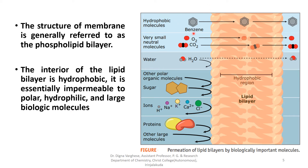The hydrophobic interior makes the membrane essentially impermeable to polar, hydrophilic, and large biological molecules. Hydrophobic molecules such as benzene are permeable. Very small neutral molecules such as gases — oxygen and carbon dioxide — are also permeable. Polar molecules such as water are totally or partially permeable. Other polar organic molecules and sugars are impermeable. Inorganic ions such as hydrogen, sodium, potassium, and chloride are impermeable, as are proteins and other large molecules. Membrane-spanning proteins facilitate or catalyze the transport of such impermeable molecules from one compartment to another.